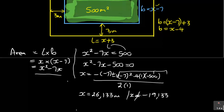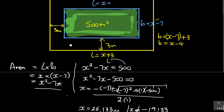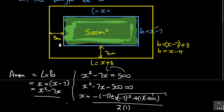Then the second one — if I use minus — it gives me minus 19.133. So X equals minus 19.133. But this one you have to ignore, because X cannot be negative. So the length X equals the positive value, which was 26.133 meters.